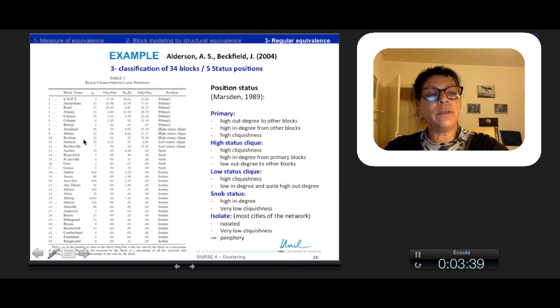Also, they qualify the 34 blocks according to their number of cities, their out-degree in proportion to the total out-degree of all the graph, their in-degree in proportion of the total in-degree also of all the graph, and the links they exchange mutually in proportion to their out-reach links.